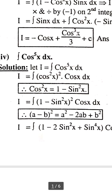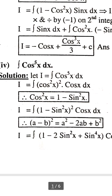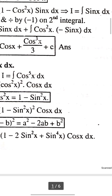Number 4: integration of cos⁵x dx. We break cos⁵x as (cos²x)² · cosx. Using the trigonometric identity cos²x = 1 − sin²x, we get (1 − sin²x)² · cosx. Expanding using (a − b)² gives 1 − 2sin²x + sin⁴x, and then we multiply through by cosx.